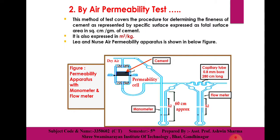The air permeability test apparatus is shown in the figure below. The components include dry air, cement, mold, permissibility cell, manometer, surface, and a capillary tube through which oil flows, and a flow meter. Note the difference between the manometer and the flow meter.